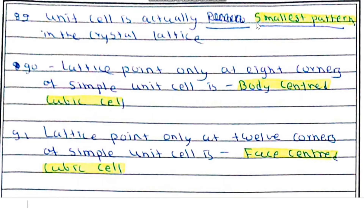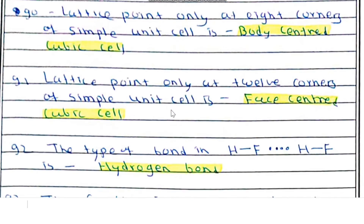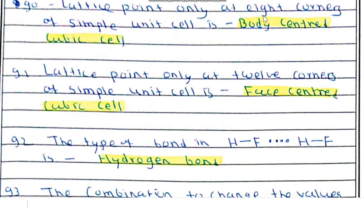Question number 89: a unit cell is the smallest pattern in the crystal lattice. When lattice points are only at the eight corners, it is a simple unit cell. When lattice points are at eight corners plus the body center, it is known as a body-centered cubic (BCC) structure, and its coordination number is 8.